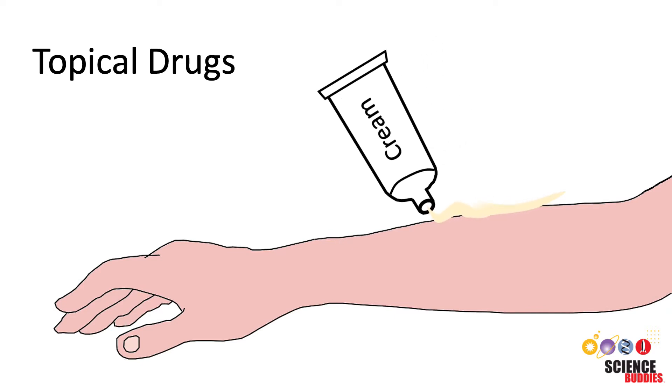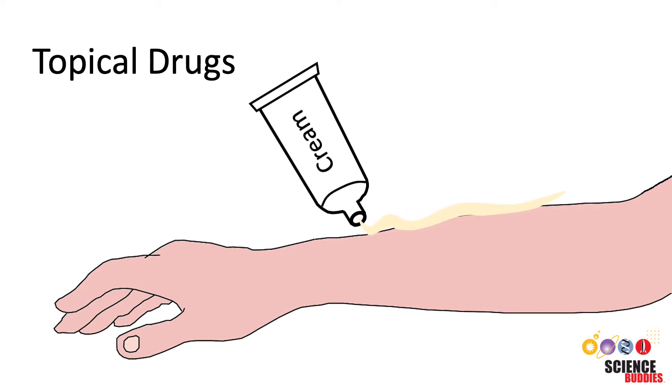For example, topical drugs such as creams or ointments are usually applied to the skin or another surface of the body, and the active ingredients are absorbed through the skin.